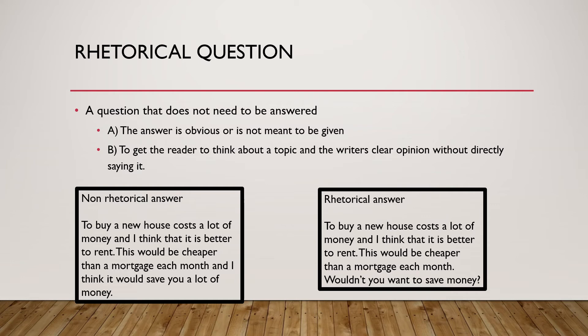For example, a non-rhetorical version would be: 'To buy a new house costs a lot of money and I think that it is better to rent. This would be cheaper than a mortgage each month and I think it would save you a lot of money.' Whilst there is nothing wrong with this, it does not use a rhetorical question. However, through using a rhetorical question: 'To buy a new house costs a lot of money and it is better to rent. This would be cheaper than a mortgage each month. Wouldn't you want to save money?' Simply by adding this question, the reader automatically knows the writer's opinion and is also reflecting on the knowledge they have gained so far, hopefully agreeing with your opinion.